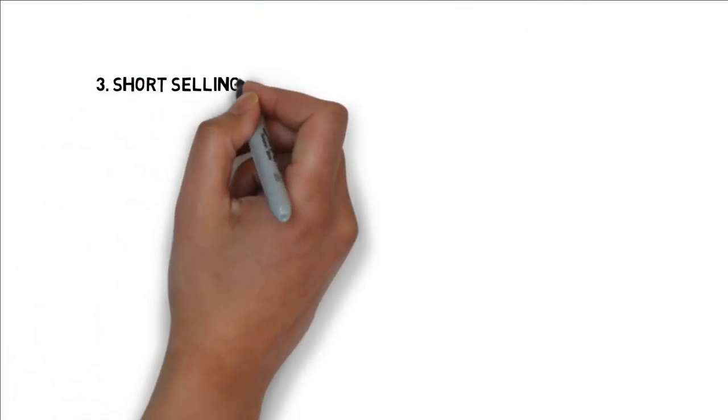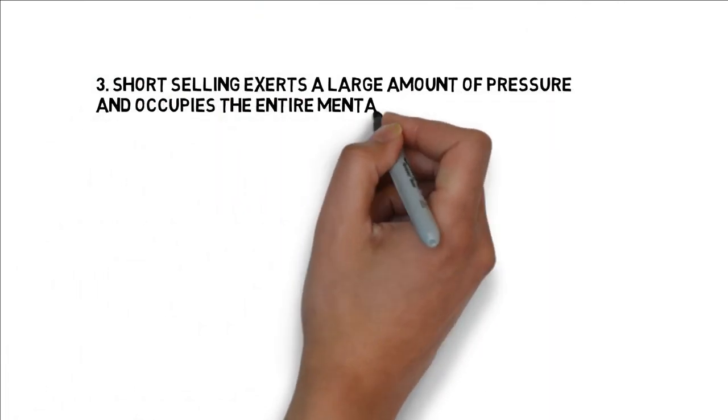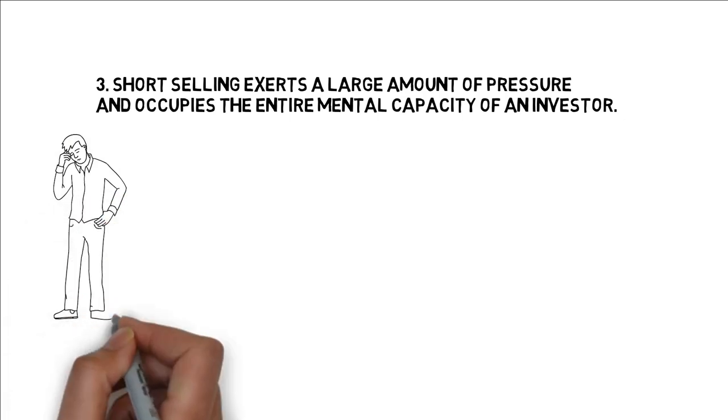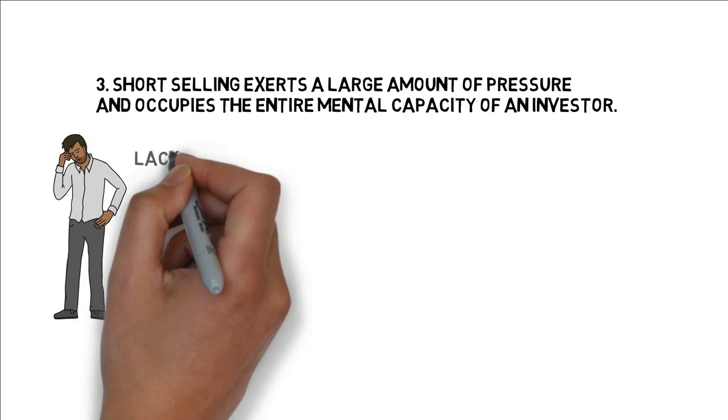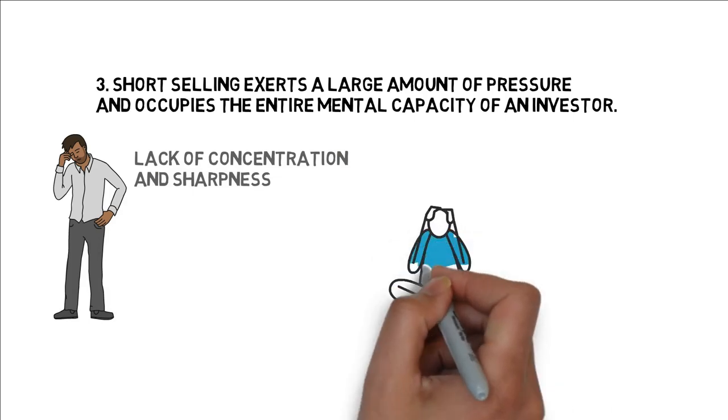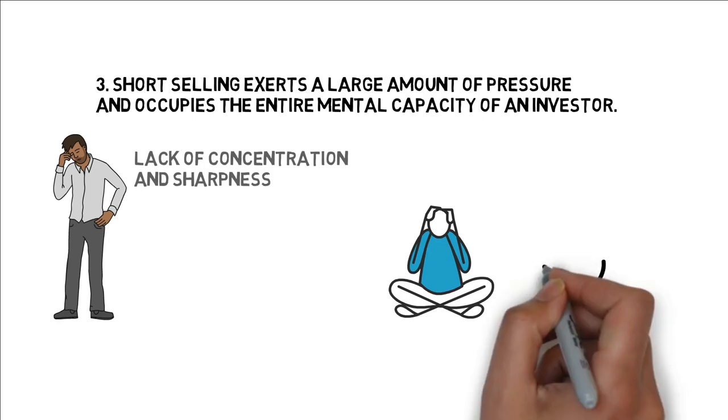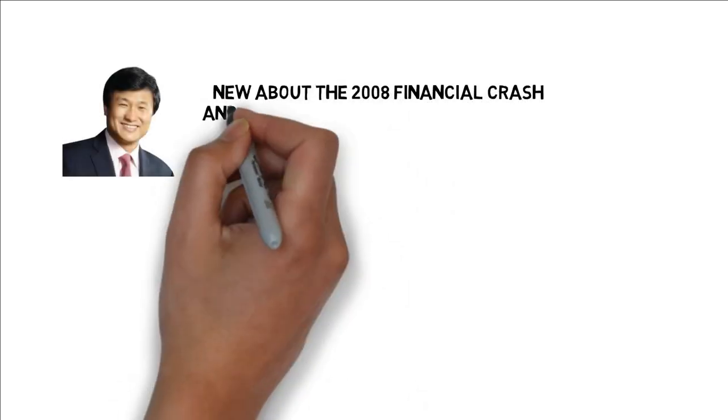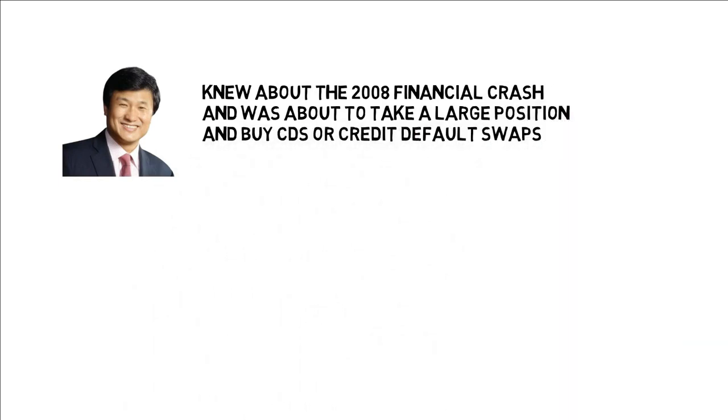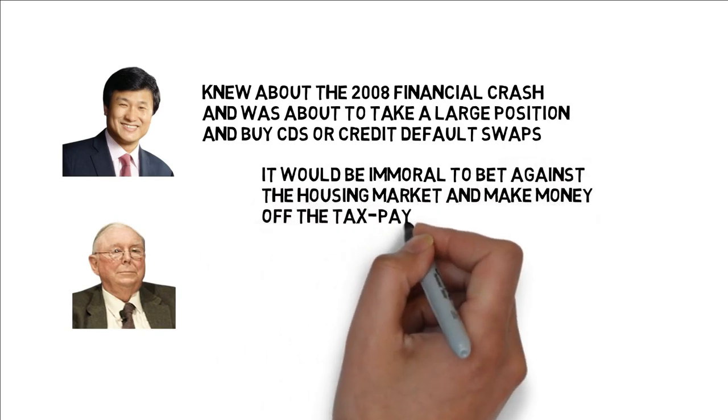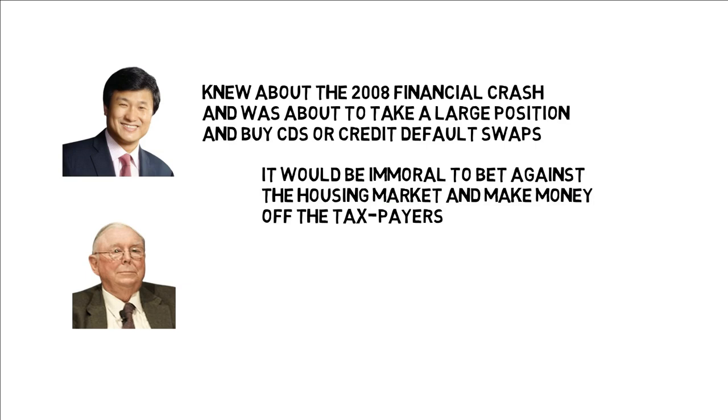Number three, short selling exerts a large amount of pressure and occupies the entire mental capacity of an investor. Leeloo believes that the confusion and lack of mental clarity short selling creates is a deadly sin. Investors often discount the opportunity cost of this lack of concentration and sharpness that one should always possess. Leeloo believes that he lost many great investment opportunities during his time of being a short seller because of these issues. In fact, in the book, he says that he knew about the 2008 financial crash and buy CDS or credit default swaps, but in 2006 and 2007, he had several discussions with Charlie Munger and was convinced that it would be immoral to bet against the housing market and make money off of taxpayers even if it meant that he would make a lot of money off of it.